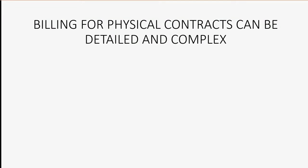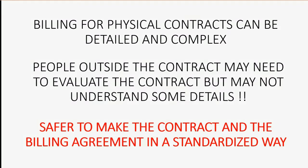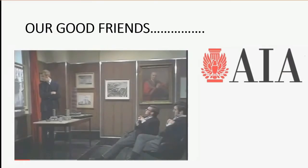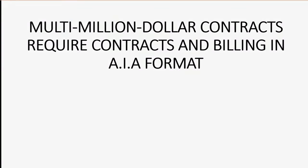Billing for physical contracts can be detailed and complex. People outside the contract may need to evaluate it but may not understand some of the details, so it's safer to structure a contract and billing agreement in a standardized way. That's why the American Institute of Architects has come up with a standardized way of classifying the different trade services and items of service, so contracts can be understood by objective parties and be clearer about each phase of the work done. Multi-million dollar contracts often require billing in AIA format.